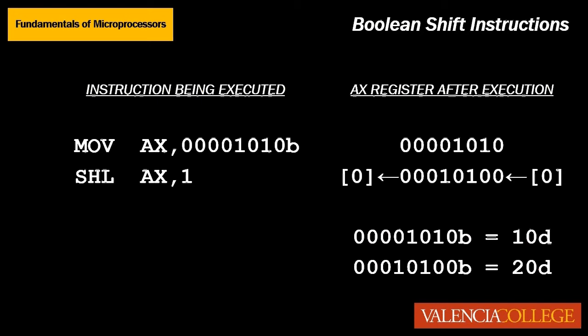Calculating the decimal value of the AL register now reveals that the 16 and 4 bits are high, thus 16 plus 4 equals 20. We started with 00001010 or 10, shifted left one bit, and ended up with 00010100 or 20. In essence, a left shift by one bit is the same as multiplying by 2.